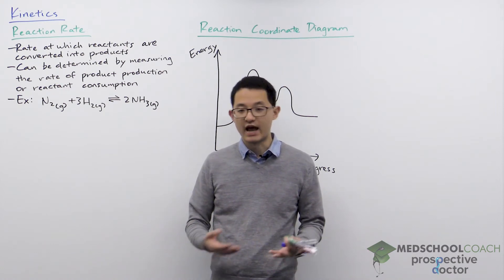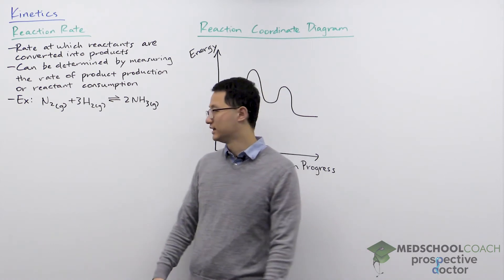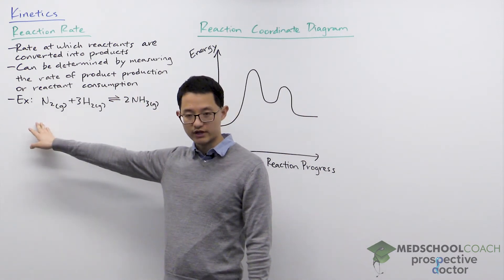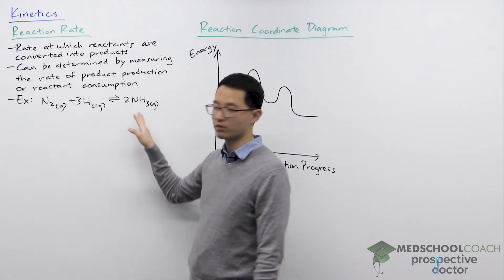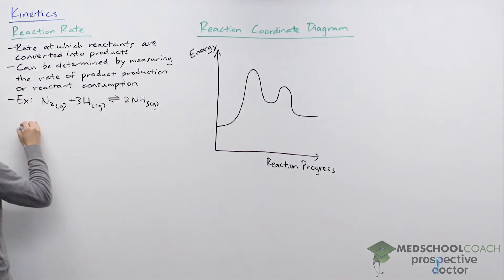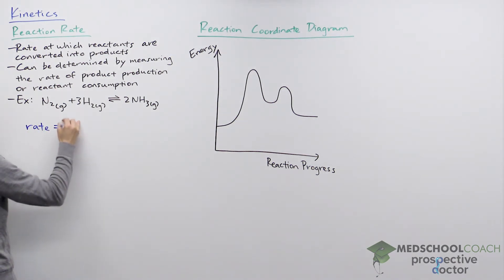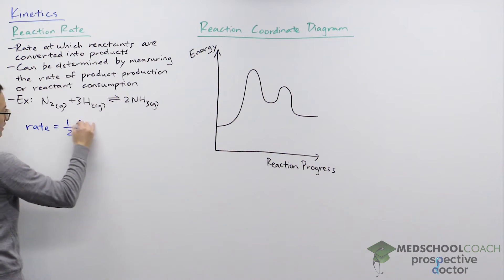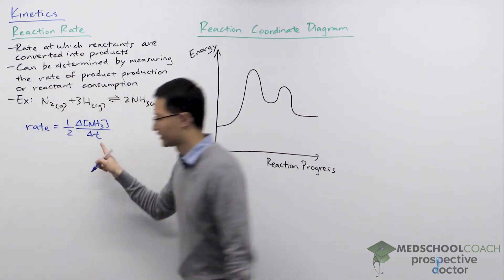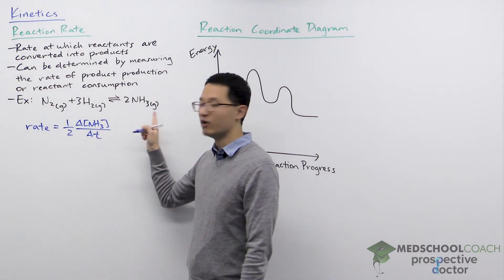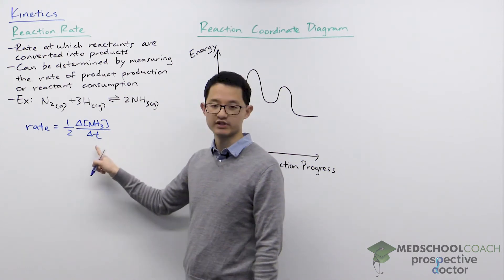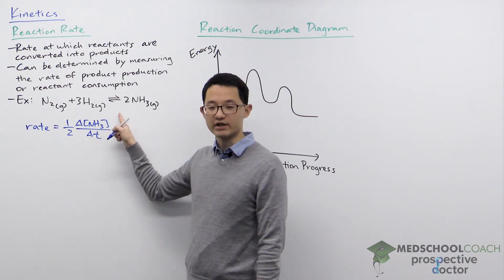Both of these tell us the same information: how fast the reaction is proceeding. To come up with an equation for this, we can look at an example where one molecule of nitrogen reacts with three molecules of hydrogen to form two molecules of ammonia. We can write some expressions for the reaction rate. One expression looks at the rate of ammonia production — the change in concentration of ammonia over time, divided by the stoichiometric coefficient.